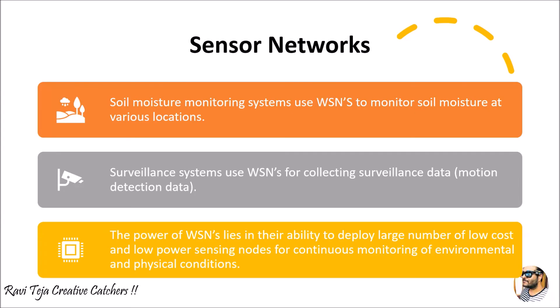Coming to more advanced applications — surveillance systems. These are the most advanced systems nowadays; almost every city, lane, colony, and building has surveillance systems. Several surveillance cameras are connected to several nodes, and these nodes are connected to coordinators. Through the internet, we are able to gather data in the form of video, audio, and recordings. With a motion detection sensor, when a person moves in front of a camera, that motion data can also be sent over the internet.